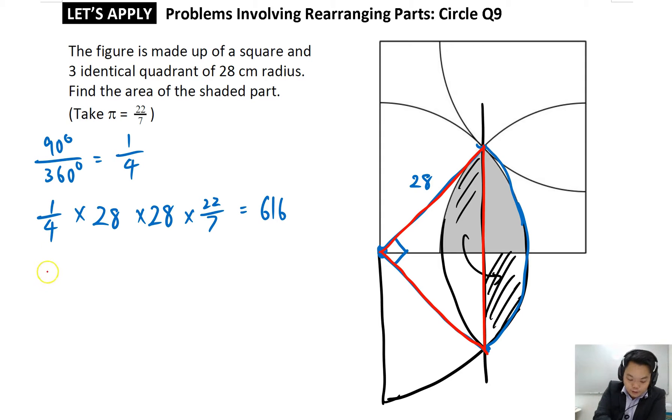...it is clear that the area of the triangle is simply half times base, 28 times height, 28. So that will be 392 cm squared.